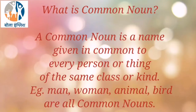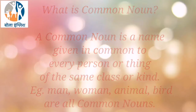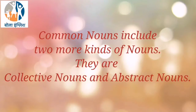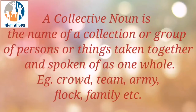A Common Noun is a name given in common to every person or thing of the same class or kind. For example, Man, Woman, Animal, Bird are all Common Nouns. Common Nouns include two more kinds of nouns: Collective Nouns and Abstract Nouns. A Collective Noun is the name of a collection or group of persons or things taken together and spoken of as one whole. For example, Crowd, Team, Army, Flock, Family, etc.